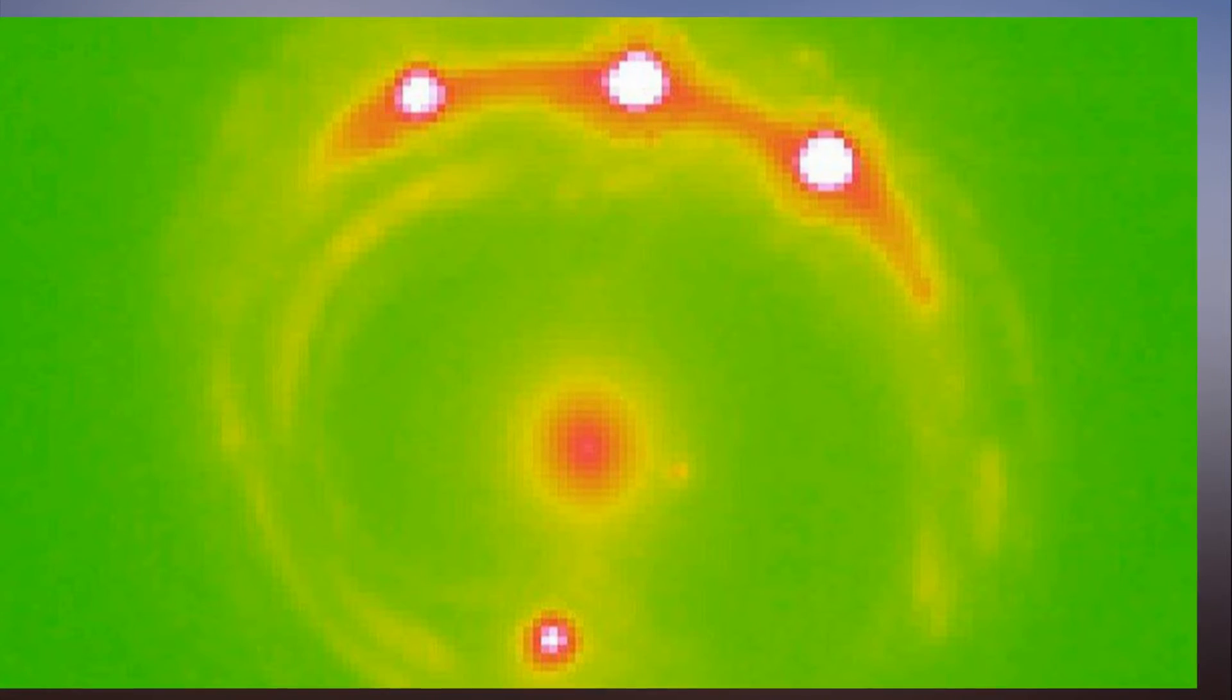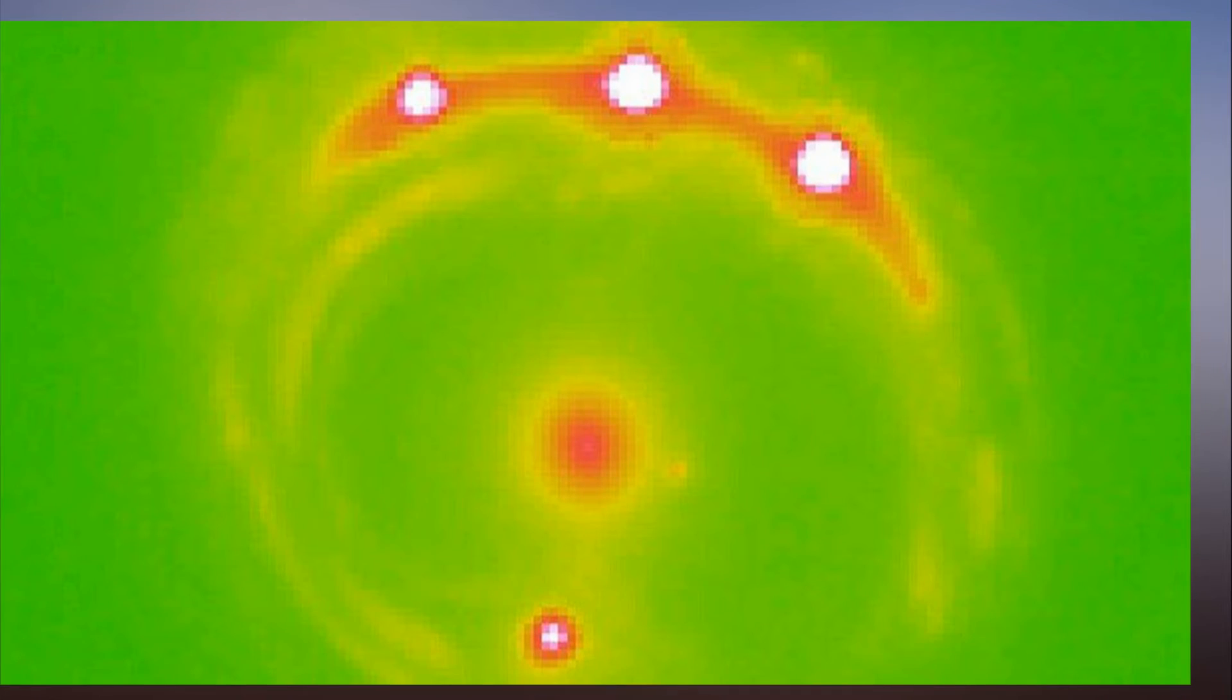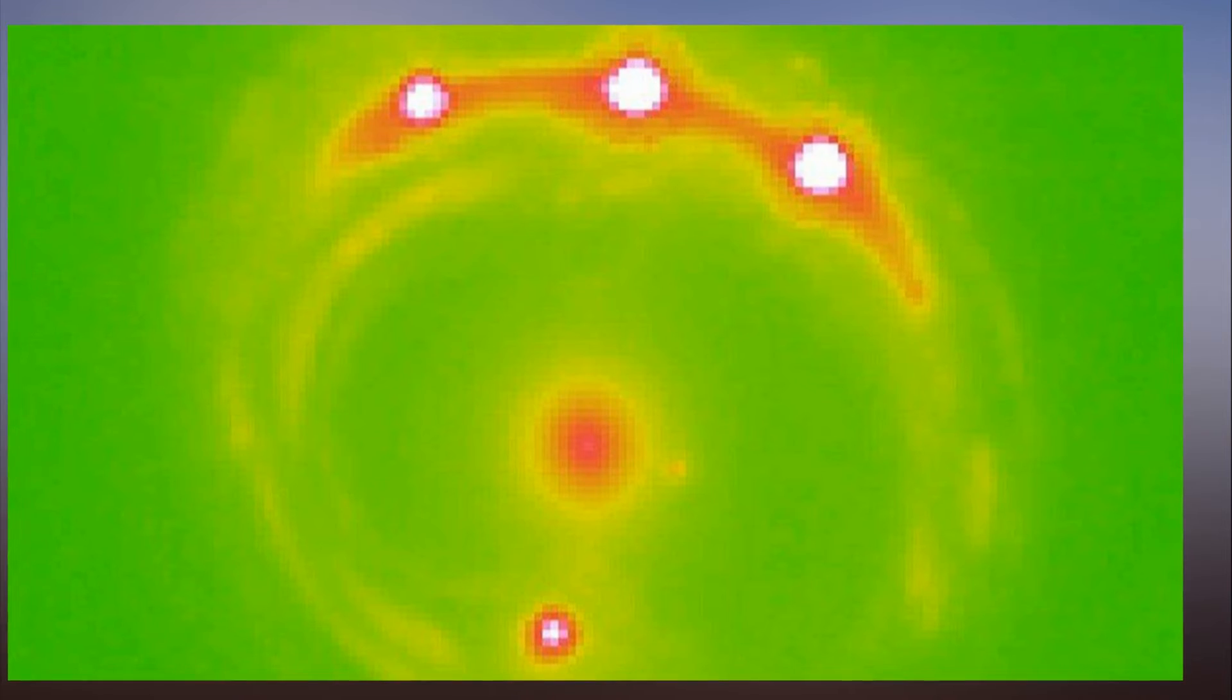However, other galaxies are too far away to detect exoplanets by any of the means we currently have. Now researchers from the University of Oklahoma claim to have spotted exoplanets in another galaxy using a technique called gravitational microlensing.